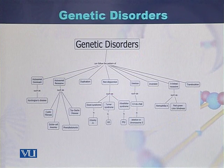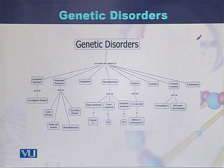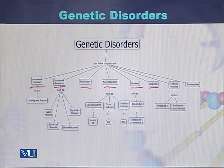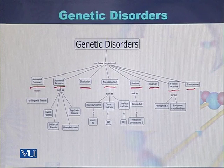Genetic disorders can follow different inheritance patterns: autosomal dominant, autosomal recessive, duplications, non-disjunction, deletion, inversion, X-linked disorders, and translocations. These are all the patterns that genetic disorders or genetic diseases can follow.